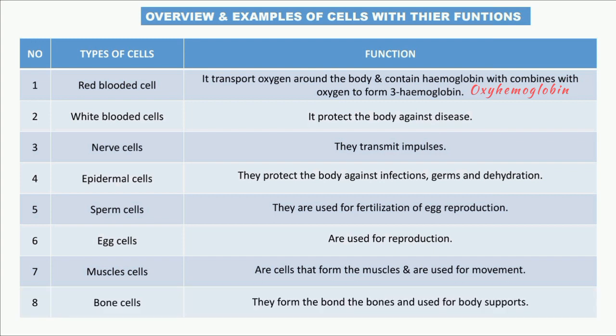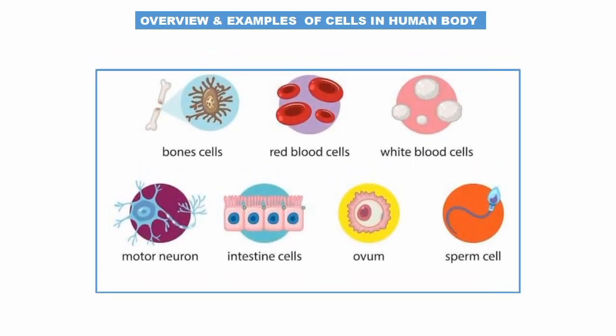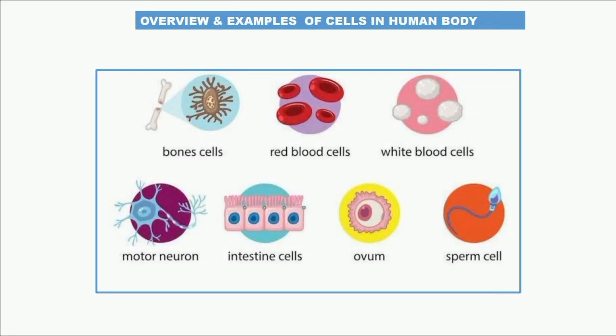Bone cells form the bones, which provide body support. These are typical examples of cells and their functions. Visually, in the human body we can observe bone cells, red and white blood cells, motor neurons, ova (egg cells), and sperm — among many other different kinds of cells found in both animals and plants.